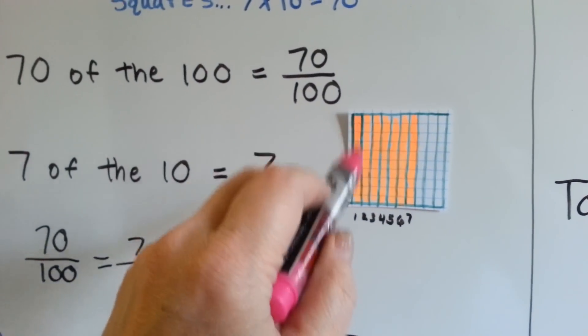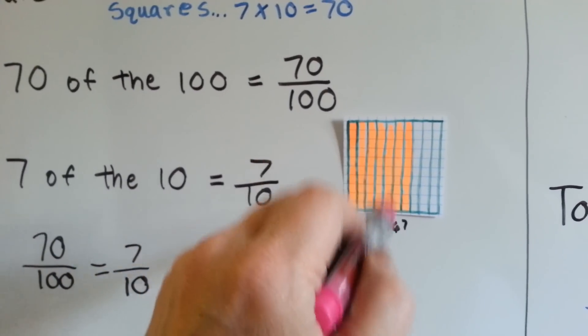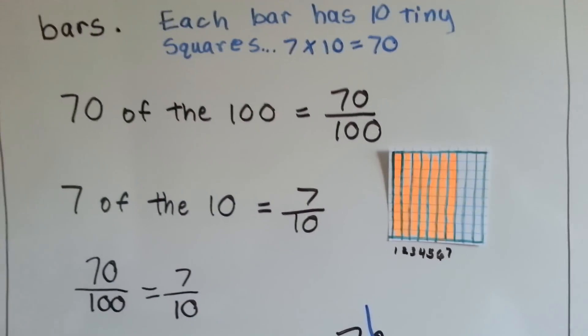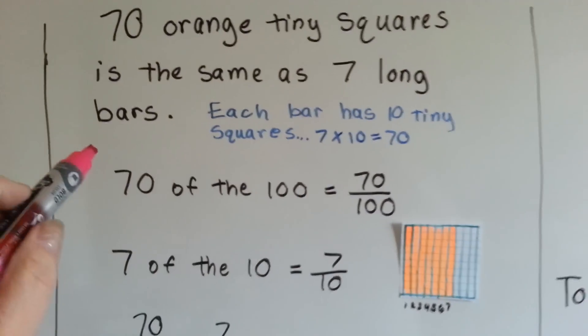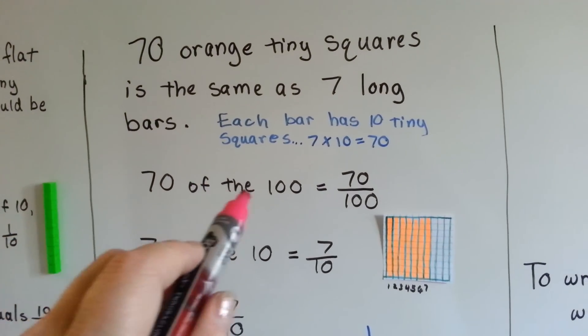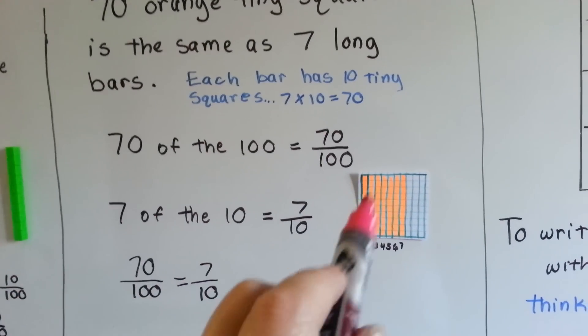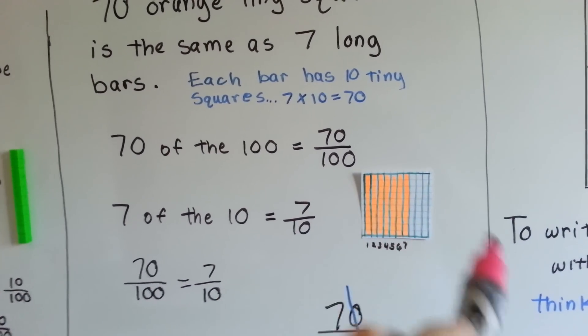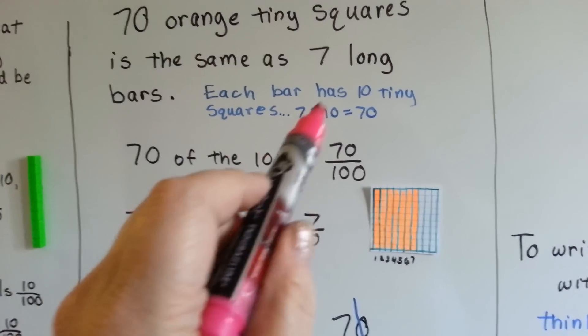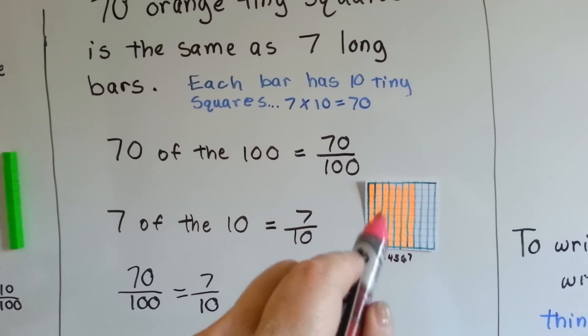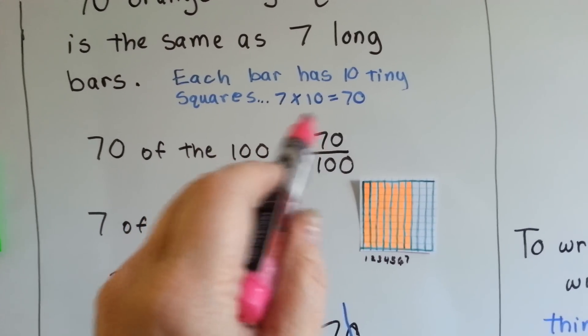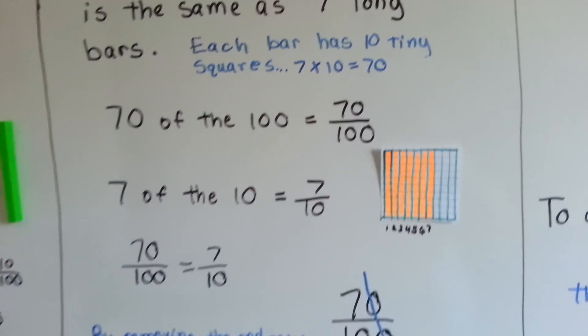One long bar, two, three, four, five, six, seven long bars. Seventy of the one hundred is seventy one hundredths, seven of the ten is seven tenths. Each bar has ten tiny little squares in it, so seven times ten is seventy.